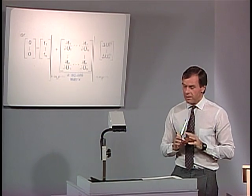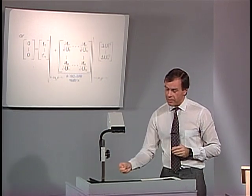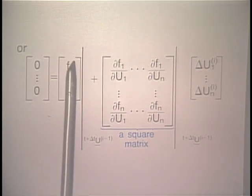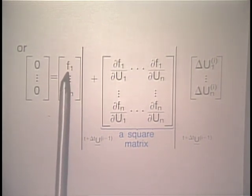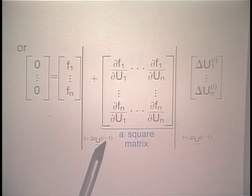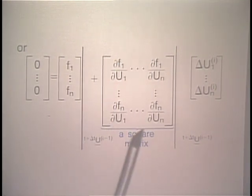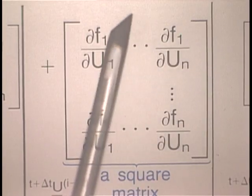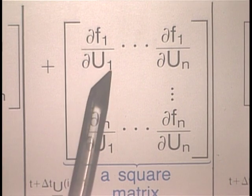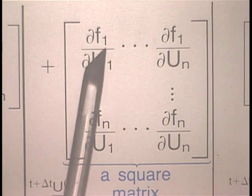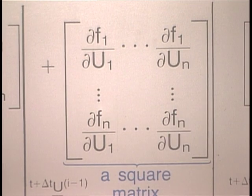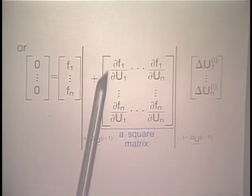Writing this equation more explicitly, we have on the left-hand side a vector of zeros. On the right-hand side, we have a vector of f_i components f_1 to f_n, all evaluated at t+delta_t u_{i-1}. Then we have a square matrix in which the individual elements are partials of f_i with respect to u_j — for example, partial f_1 with respect to u_1, partial f_n with respect to u_n, and so on. This matrix will give us the tangent stiffness matrix, multiplied by the vector of incremental nodal point displacements corresponding to iteration i.